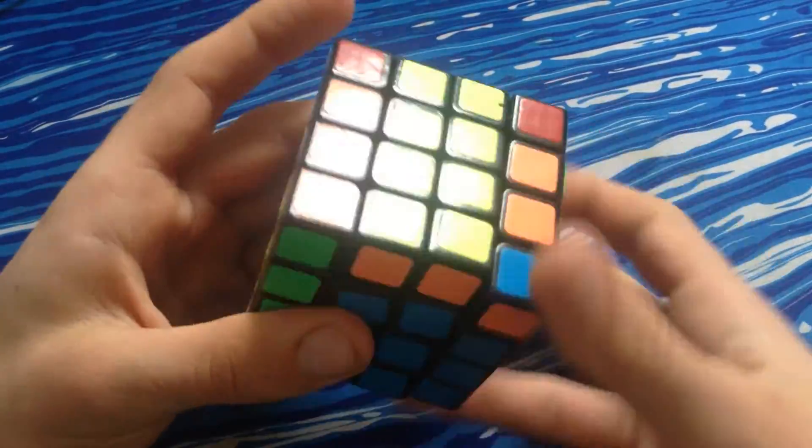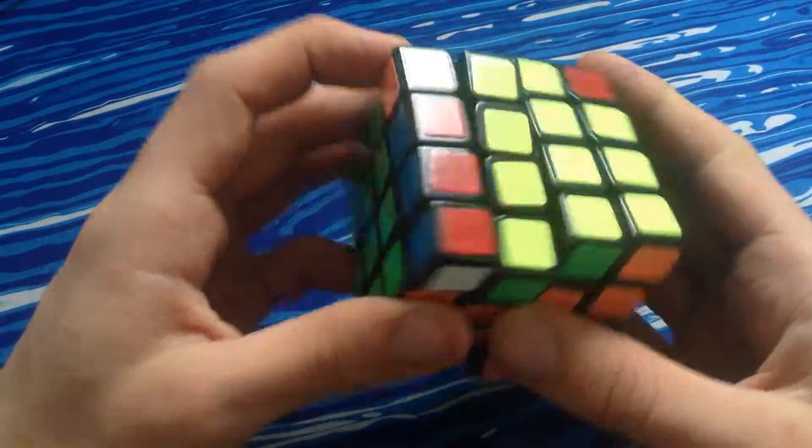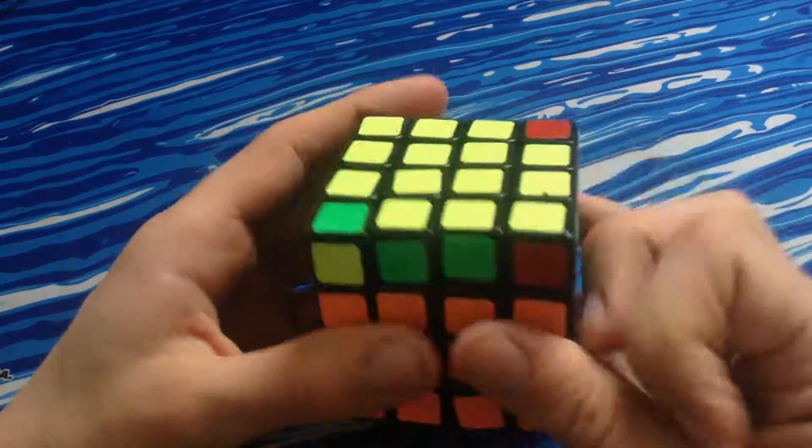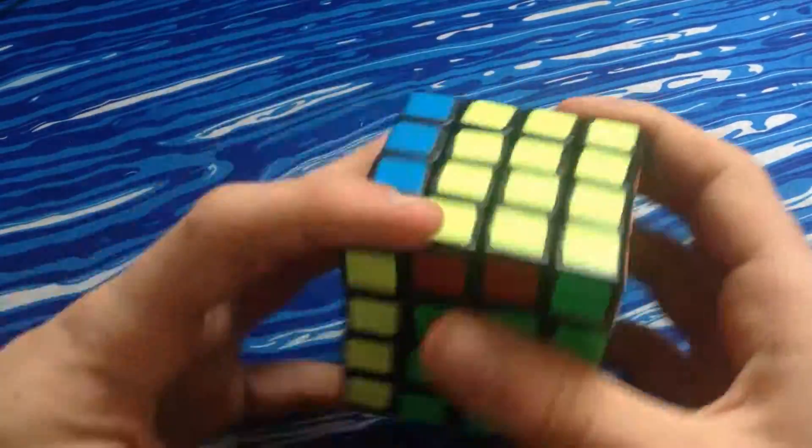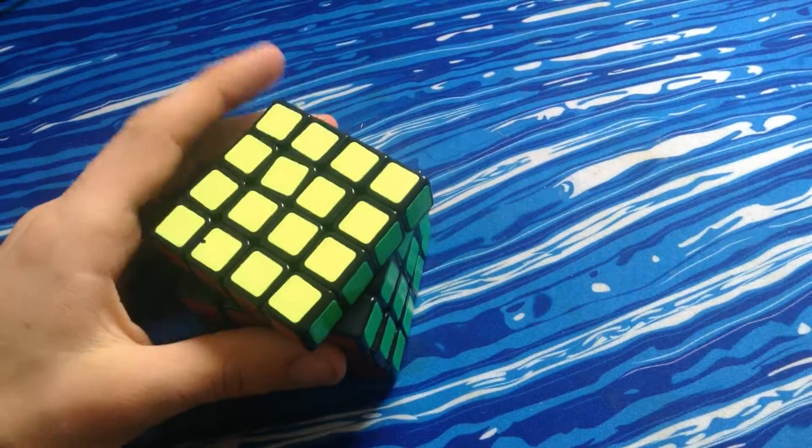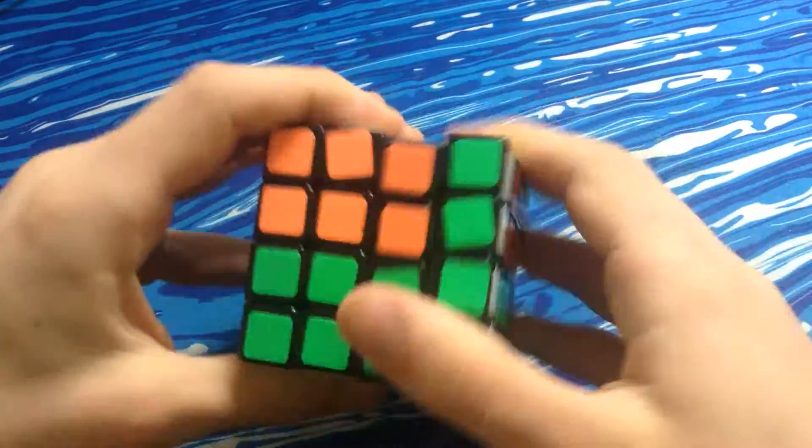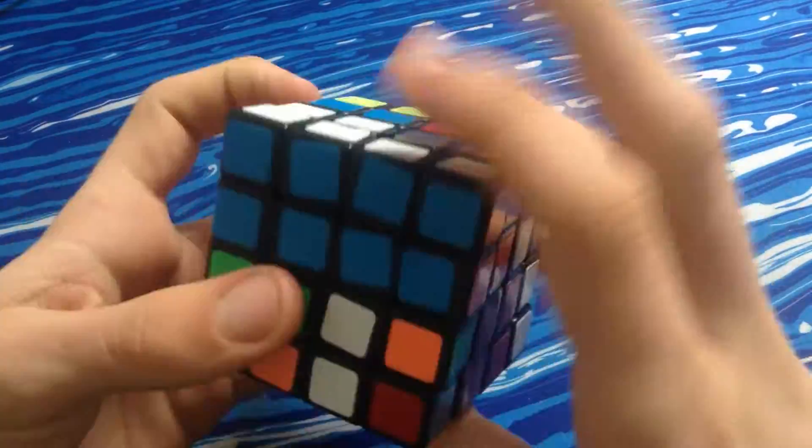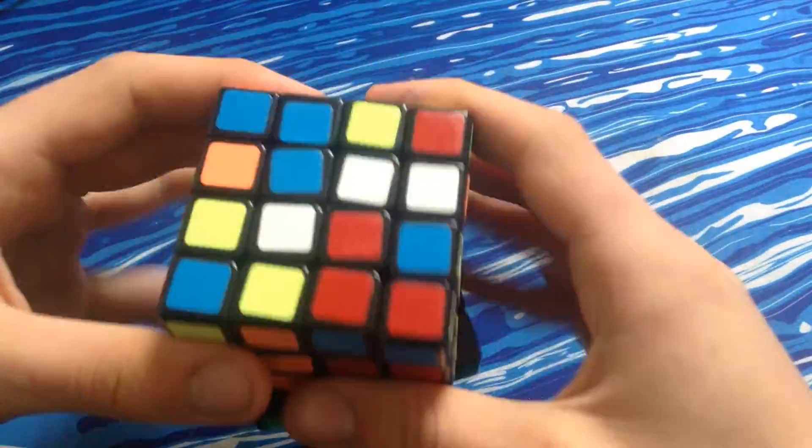I'm going to solve the F2L pair, so I spot that. Insert it so I ring the edges, which means I've not got OLL parity. Do a U2, and I've got no parity at all, which is awfully nice. I've been explaining these really, really badly.